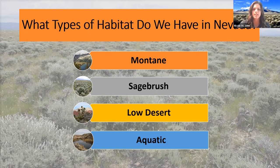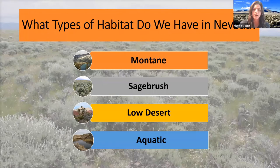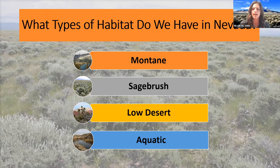Moving down in elevation, we move into the sagebrush habitat, which is going to be full of grasses, wildflowers, and lots of vegetation. It's made up of variable temperatures so we can have high highs and low lows. It's more of a mid to high elevation area — one step down in elevation from the montane habitat. This is a primary habitat type here in Nevada and many Nevada communities across the state can be found in the sagebrush habitat.